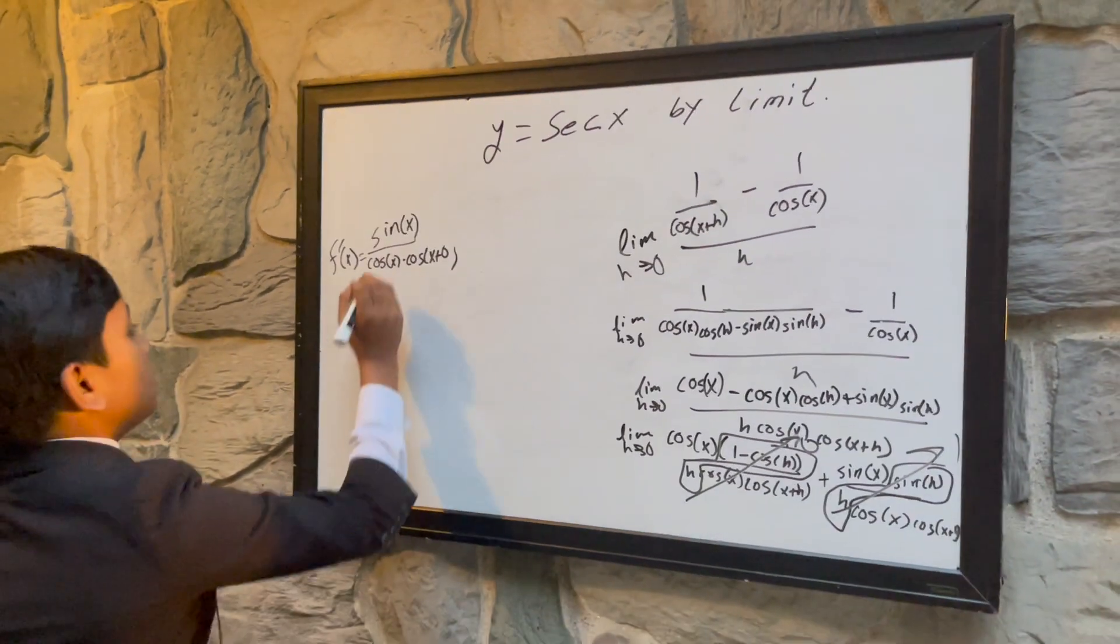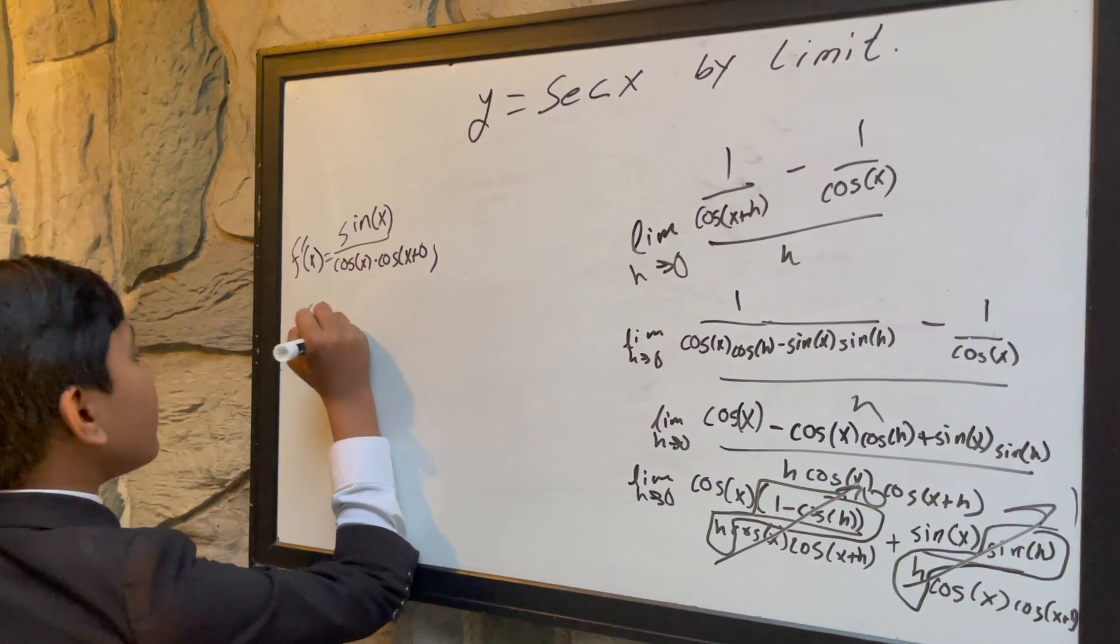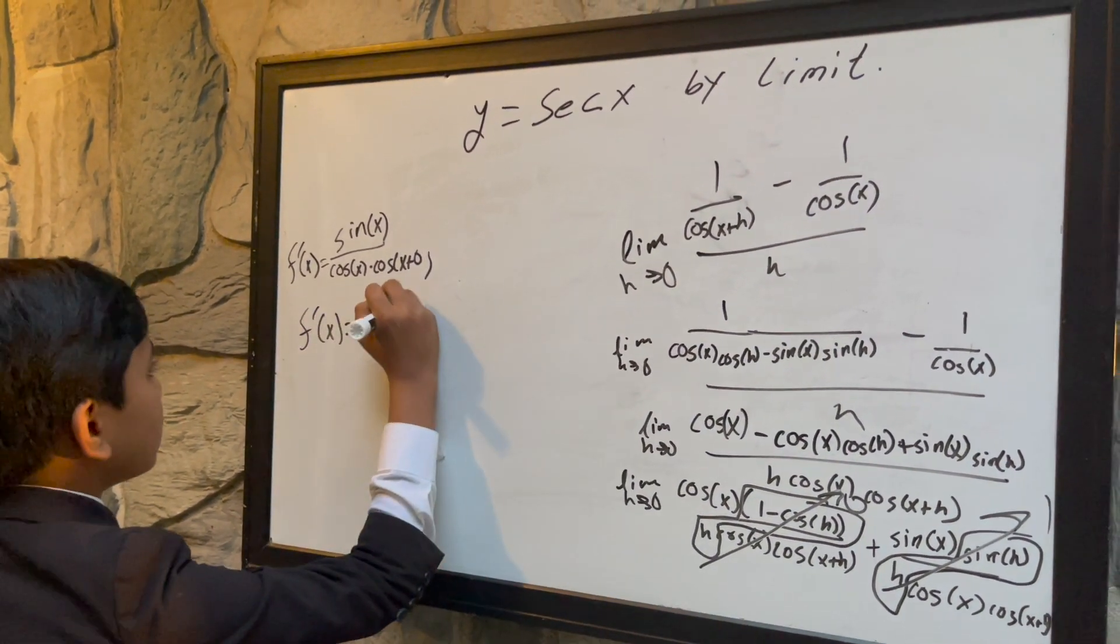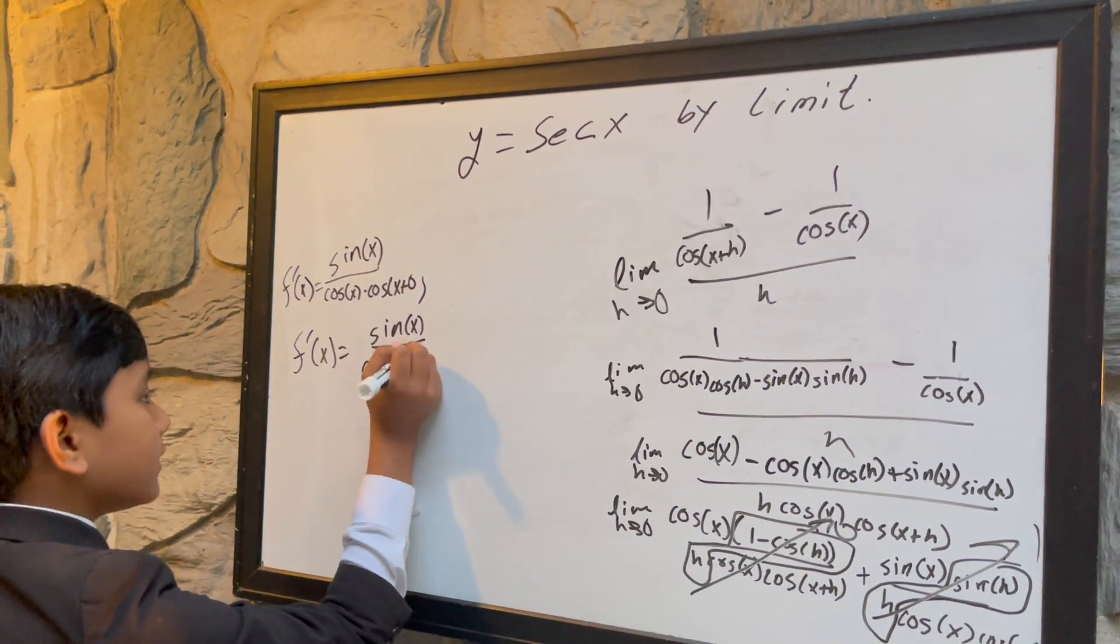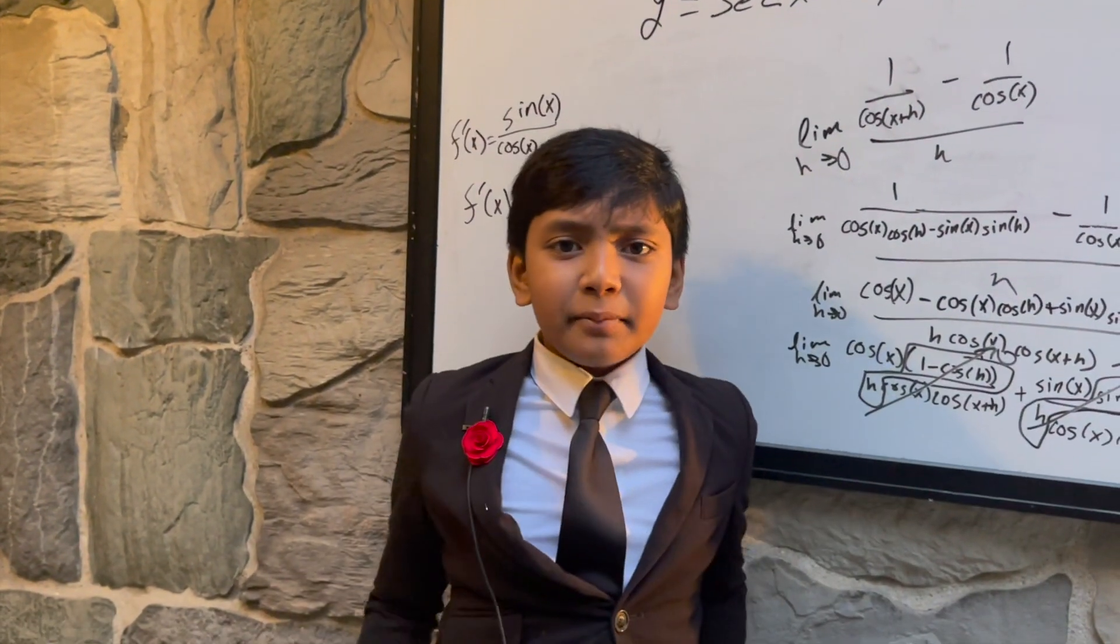So, we get f prime of x is equivalent to sine of x over cosine squared of x. Easy, right? No, mama mia!